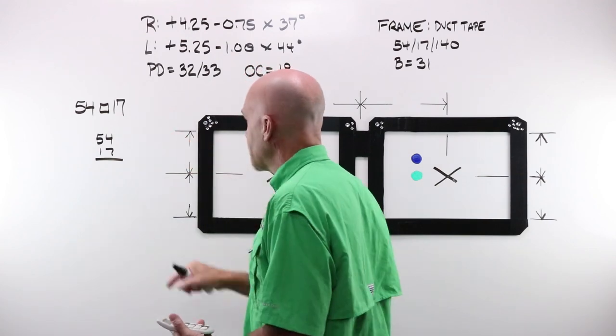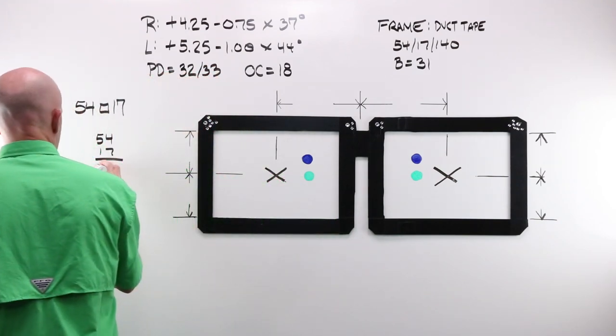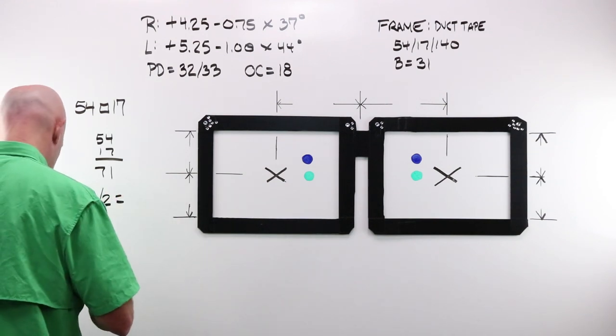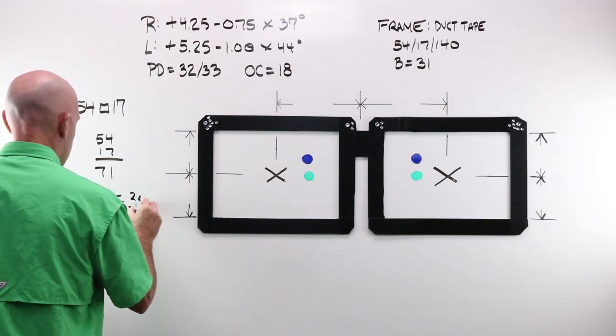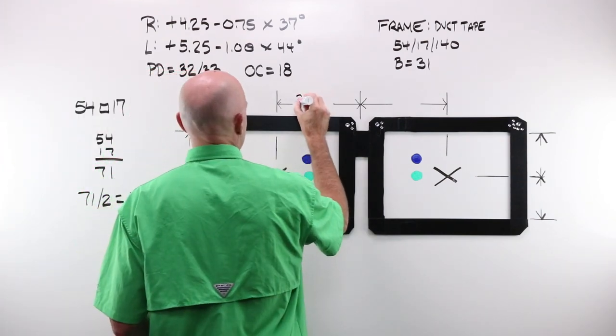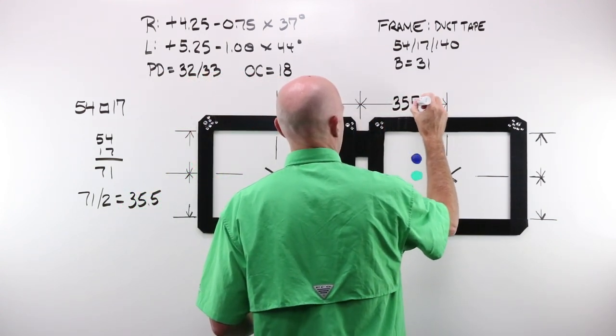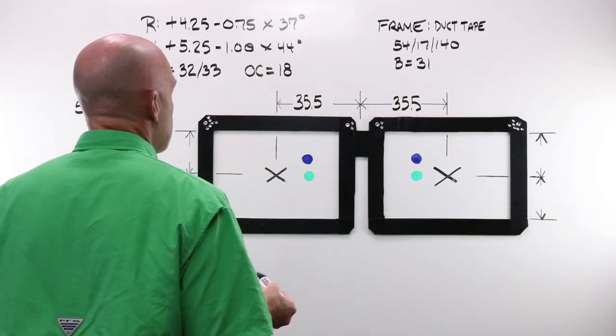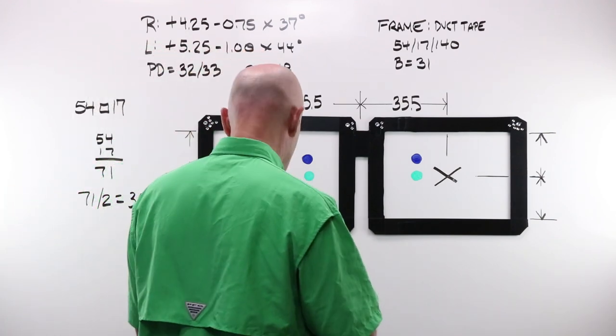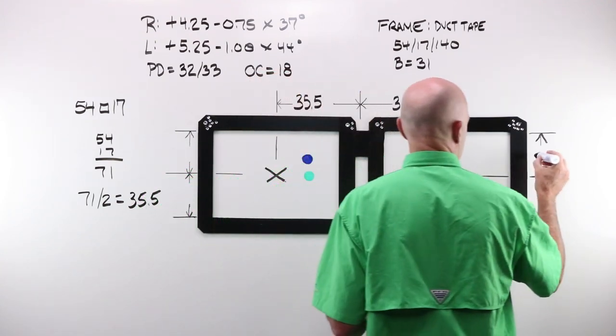I have a frame with a boxing system of 54 by 17. That's 71. 71 divided by 2 gives me 35.5. That means I can fill this in.